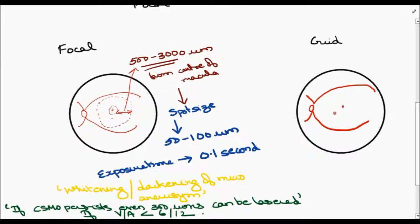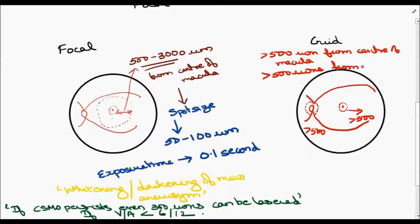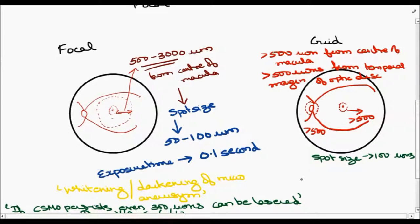Now the grid laser is usually done in a grid pattern, greater than 500 microns from the center of macula and far greater than 500 microns from the temporal margin of the optic disc. Spot size is 100 microns and exposure time is 0.1 second.